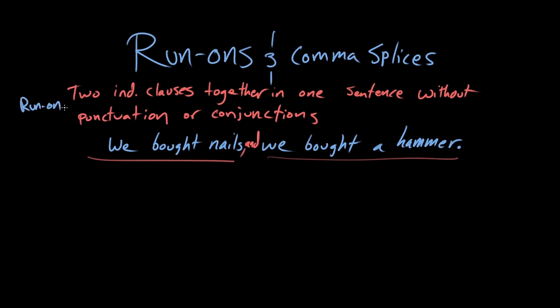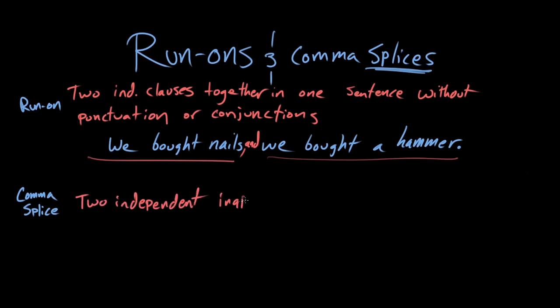Now I want to talk about comma splicing. The word splice is not a super common term unless you're a sailor or a film editor. Splicing originally meant to take two ropes, untangle them, and weave them back together — it's a sailor's term. In grammar, a comma splice is an inappropriate joining of two independent clauses by using a comma.